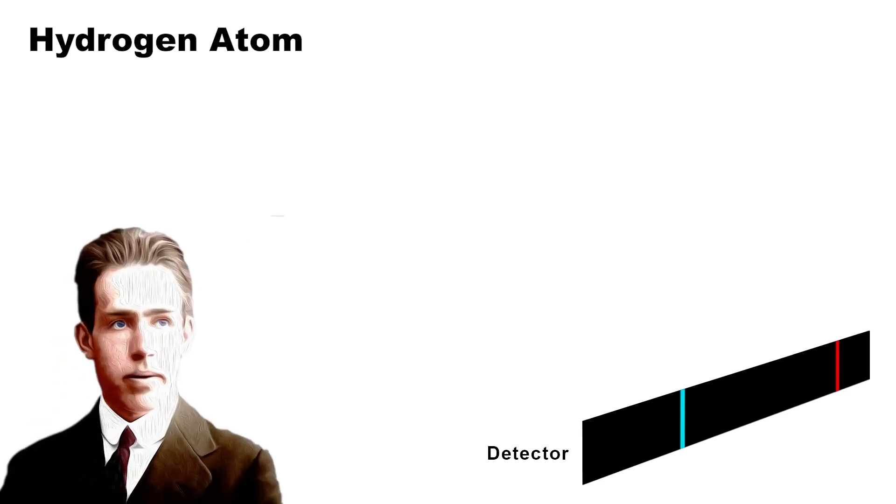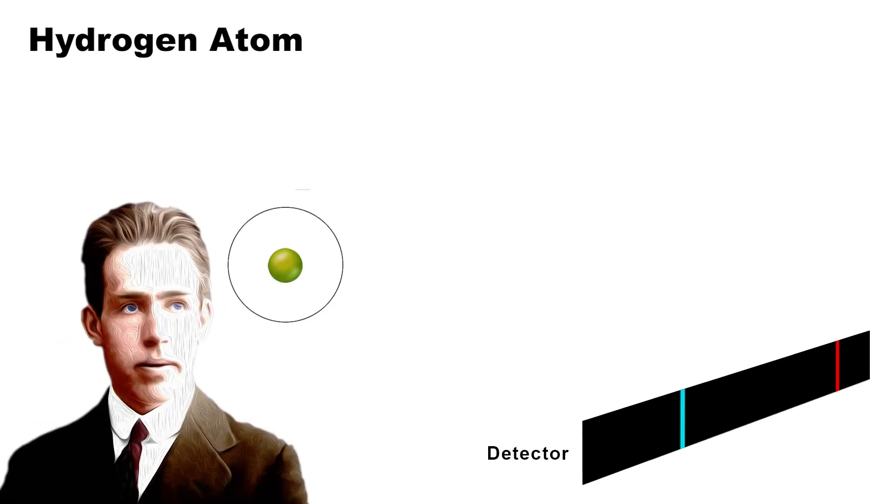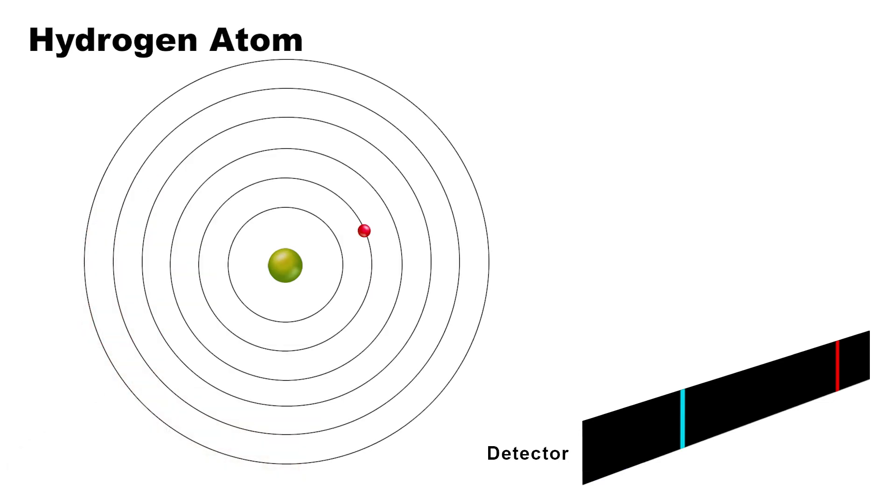In 1913, Niels Bohr discovered that the electron could only jump to specific energy level orbits, quanta. For hydrogen, in the visible light range, there are exactly four electron jumps possible. And the specific colors matching these jumps are red, cyan, blue, and violet. The four spectral lines of hydrogen.